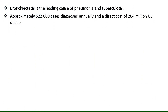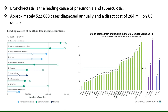On the other hand, bronchiectasis, which is a chronic lung condition, is the leading cause of pneumonia and tuberculosis. Pneumonia and tuberculosis are the leading causes of death in low- and high-income countries, and bronchiectasis is the leading cause of developing pneumonia and tuberculosis, with approximately 522,000 cases diagnosed annually and a direct cost of $734 million.